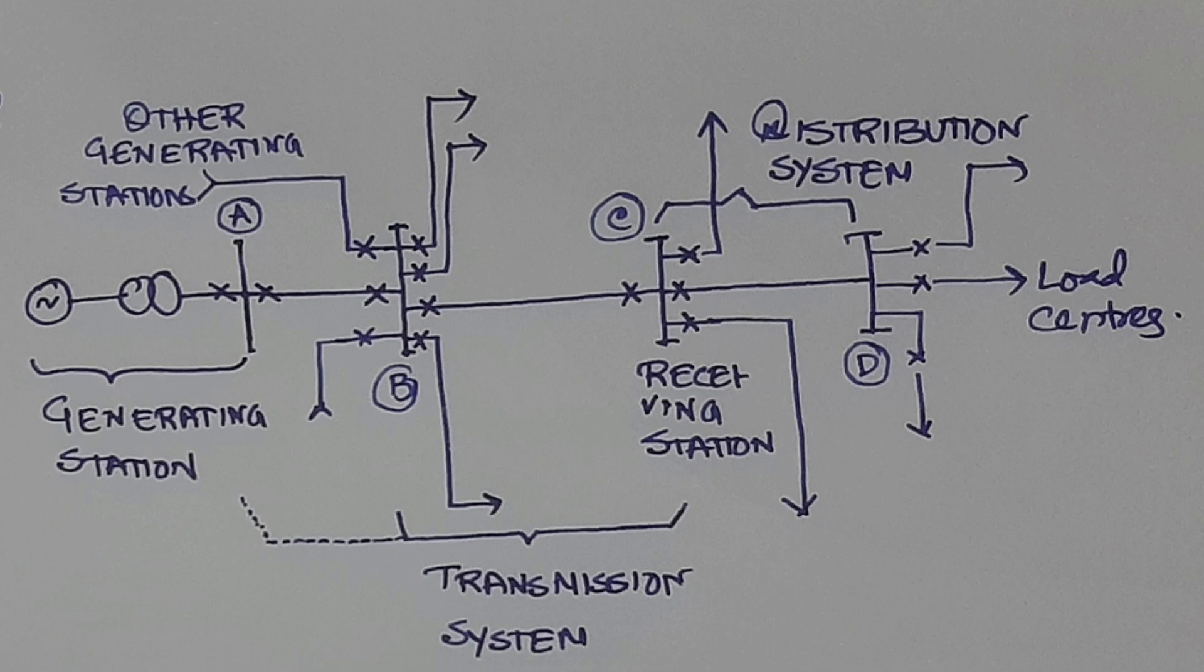Then it is evacuated through a transmission line. At point B there are many other generating stations connected and as output different transmission lines are taken and distributed to